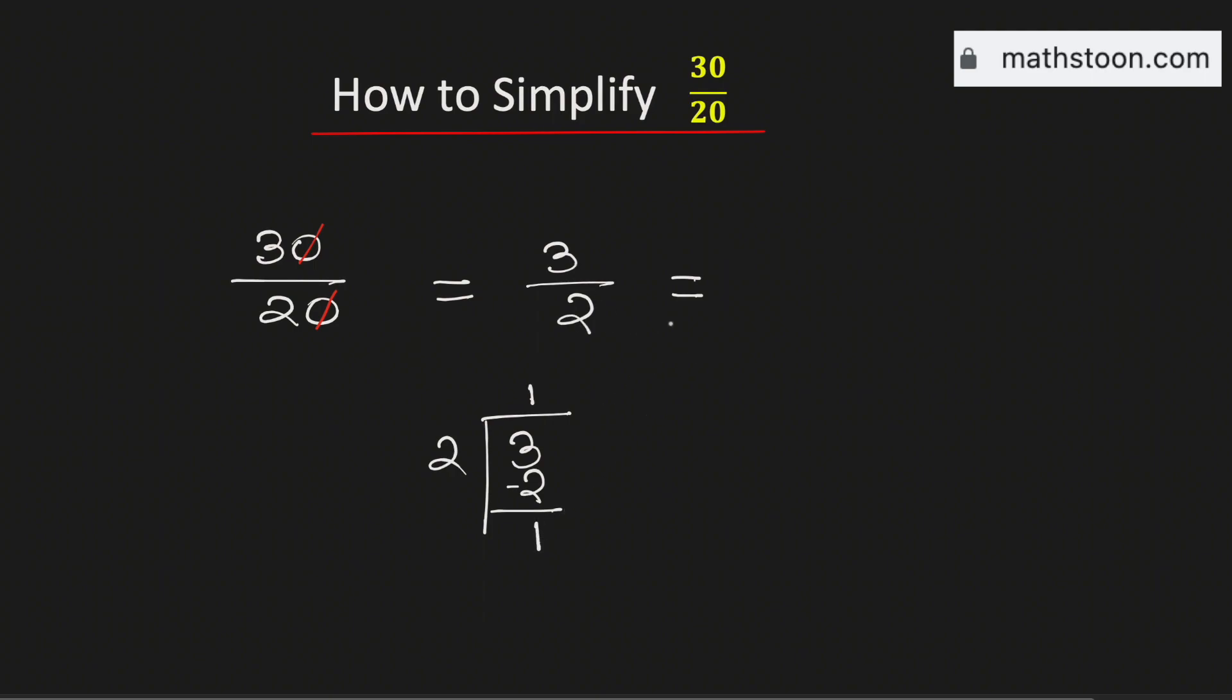Therefore 3 over 2 is same as 1 and 1 half. This means that 30 over 20 simplified as a mixed number is equal to 1 and 1 half. And this is our final answer.